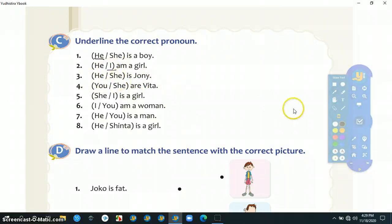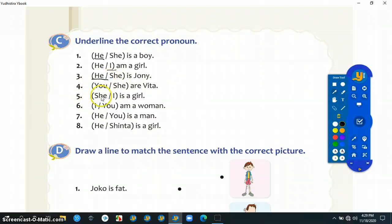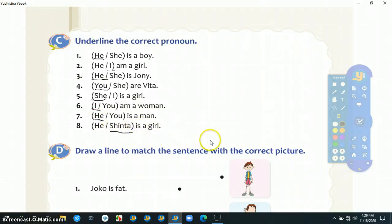Number three: Johnny, kalau Johnny kan berarti laki-laki, berarti otomatis he. Number four: you are Vita. Number five: Sinta, berarti Sinta is a girl.